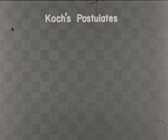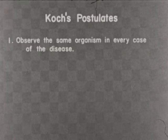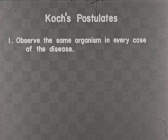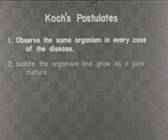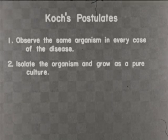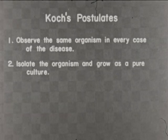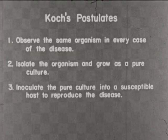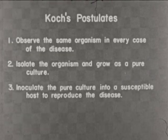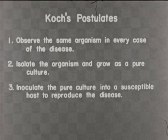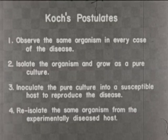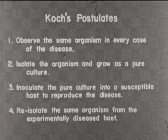Koch's postulates consist of four steps. First, observe the same organism in every case of the disease. Second, isolate the organism and grow it as a pure culture. Third, inoculate the pure culture into a susceptible host to reproduce the disease. And fourth, re-isolate the same organism from the experimentally diseased host.